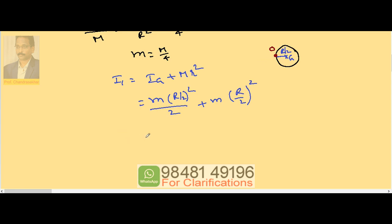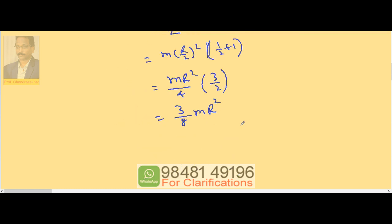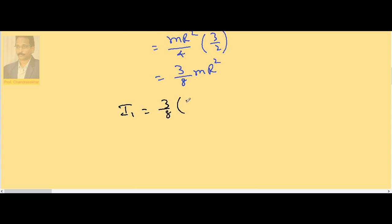Taking m·(R/2)² common, we get I1 = m·(R/2)²·(1/2 + 1) = m·(R²/4)·(3/2) = 3mR²/8. Substituting small m = M/4, we get I1 = (3/8)·(M/4)·R² = 3MR²/32.